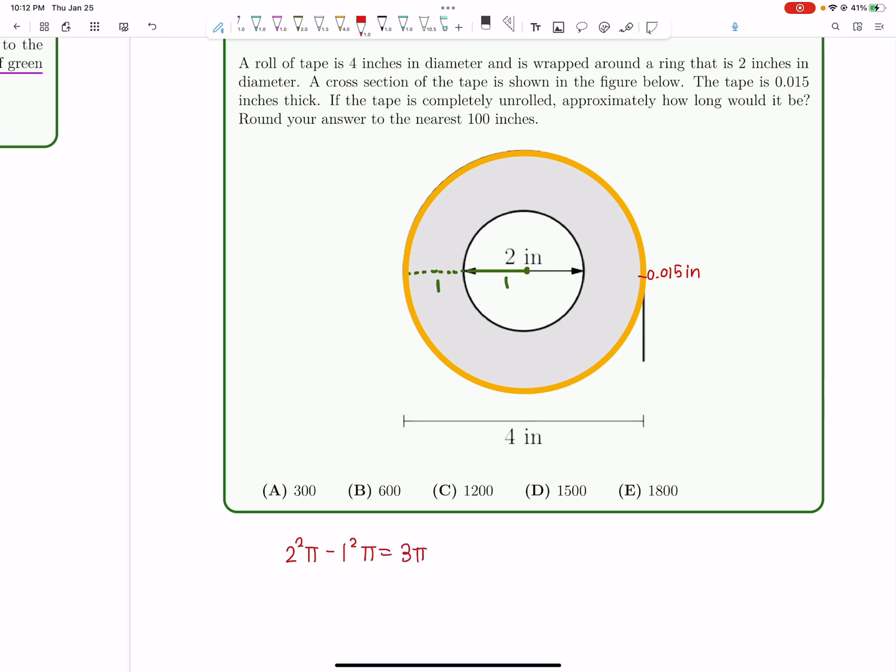So 3 pi is roughly the area of this entire region, correct? But the question is, we're not asked to find the area. The area would just be 3 pi, that would be nice and simple.